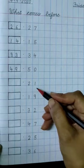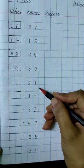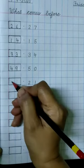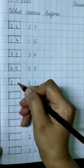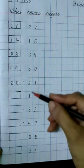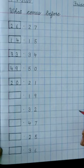Now what comes before 21? 20, 21. 20 comes before 21. So write 2, 0, 20 in this box. So students like this write remaining numbers and complete this work.